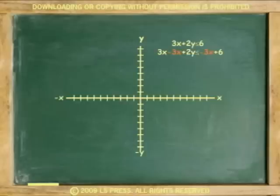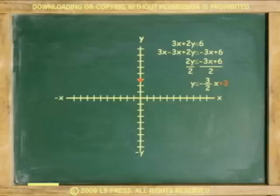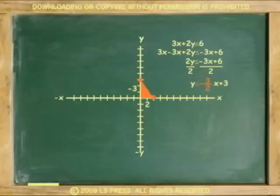Subtract 3x from both sides. Divide by 2 both sides. The y-intercept is 3, and the slope is negative 3 over 2. Because y in the inequality is less than or equal to, the area is under the line and the line is solid.